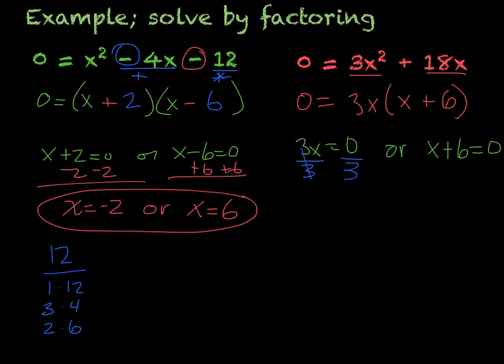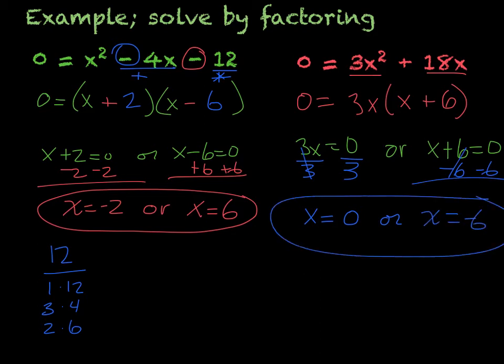So I'm going to divide by 3. x = 0 divided by 3 is 0. Or I'm going to subtract the 6. x = -6. So my two answers are 0 or -6.